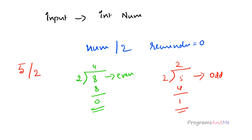To check whether a number is odd or even, we divide the number by 2 and check the remainder. If the remainder is 0, that means the number is even; if not, it is an odd number.